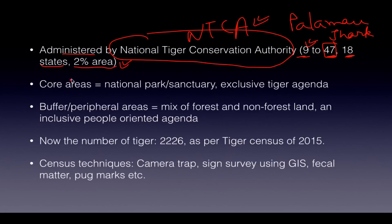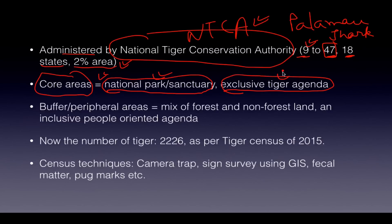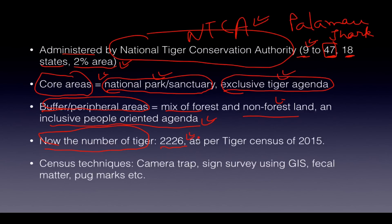Core areas essentially have national park status and have an exclusive tiger agenda under NTCA. The buffer or peripheral areas are a mix of forest and non-forest land with an inclusive people-oriented agenda. As per the latest census of 2015, the number of tigers is 2,226, showing that we have increased the dwindling tiger population from the early 2000s.